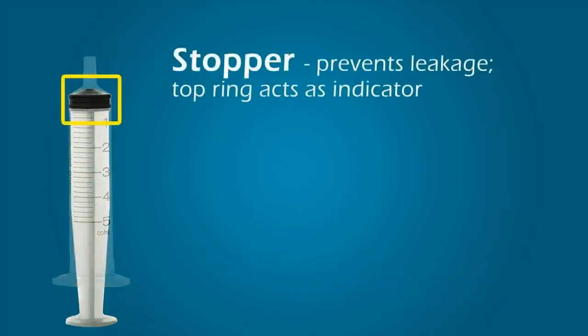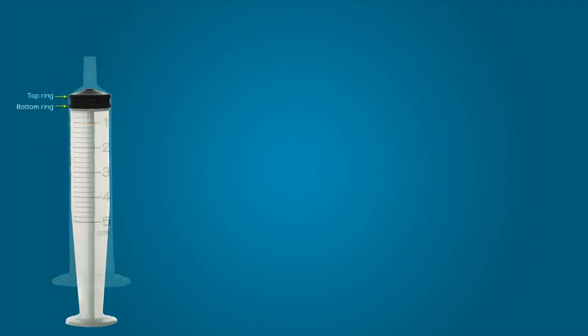At the top of the plunger is a rubbery tip called the stopper. The stopper prevents medication from leaking around the plunger. You will notice that the stopper has a top ring and a bottom ring. The top ring acts as an indicator for measuring the medication contained within the barrel of the syringe.